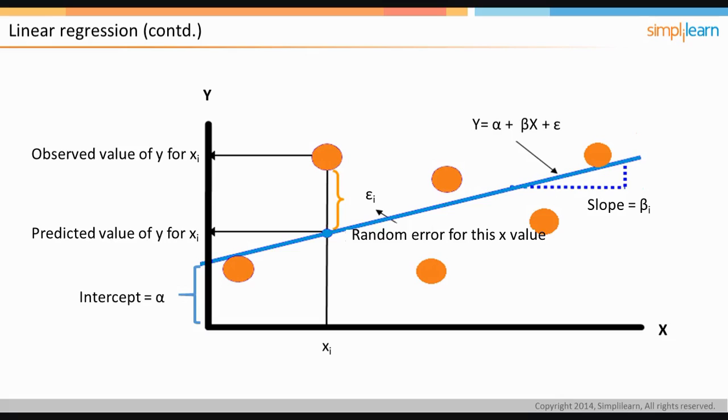For an input xi, the predicted value is shown here from the line. The observed value for xi can be seen from the orange dot. The difference between the observed and predicted value is denoted by epsilon, or the random error.